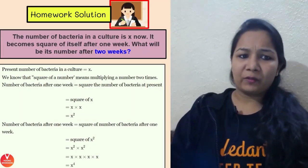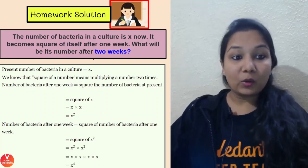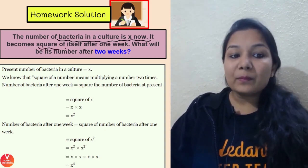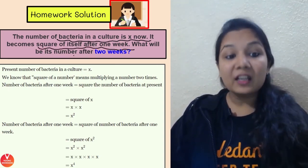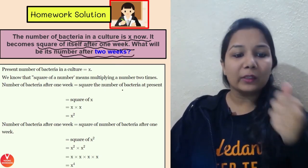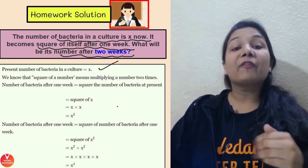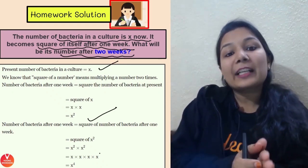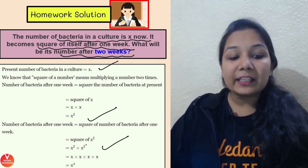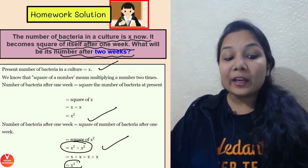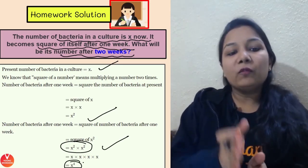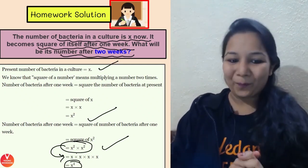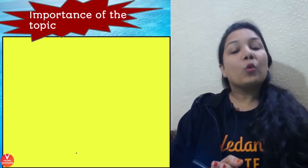In the previous session homework: the number of bacteria in a culture is x. It becomes the square of itself after one week — so after one week it is x squared. After two weeks, it will be x squared, squared, which is x raised to the power four. Here we are using the concept of expanding exponential form.